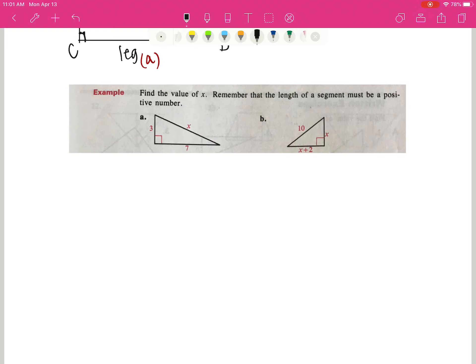On the left-hand side, I've got a leg that has a length of 7, a leg that has a length of 3, and then the hypotenuse, which is a length of x. The Pythagorean theorem says you take the leg, square it, plus the other leg, square it, equals the hypotenuse squared.